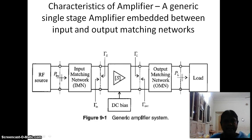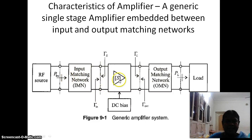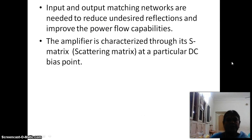Characteristics of amplifier. A generic single-stage amplifier is embedded between input and output matching networks. This diagram shows the generic amplifier system — the amplifier is interfaced between the input matching network and the output matching network. To have maximum power delivered, we should always have input and output matching networks and also to avoid unnecessary oscillations. Here the input we have RF source and the output we have the load, and we also have to provide necessary DC bias. Input and output matching networks are needed to reduce undesired reflections and improve the power flow capabilities.